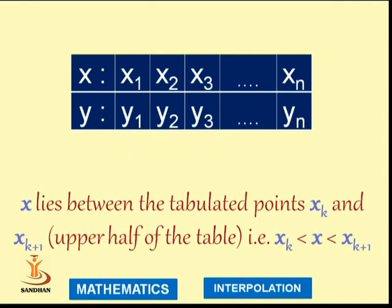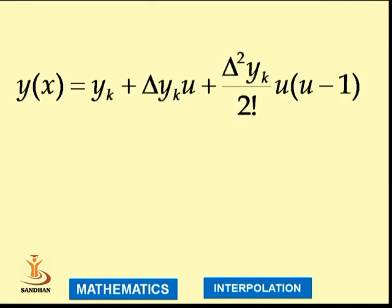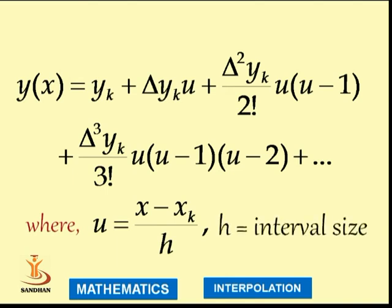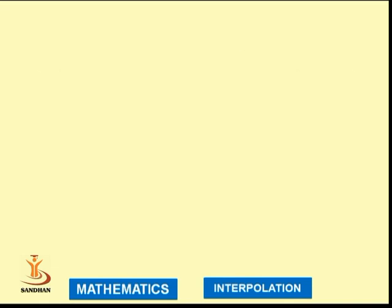then we use the formula: y(x) = yₖ + Δyₖ·u + (Δ²yₖ/2!)·u(u-1) + (Δ³yₖ/3!)·u(u-1)(u-2) and so on, where u is computed as (x - xₖ)/h, and h is called the interval size.